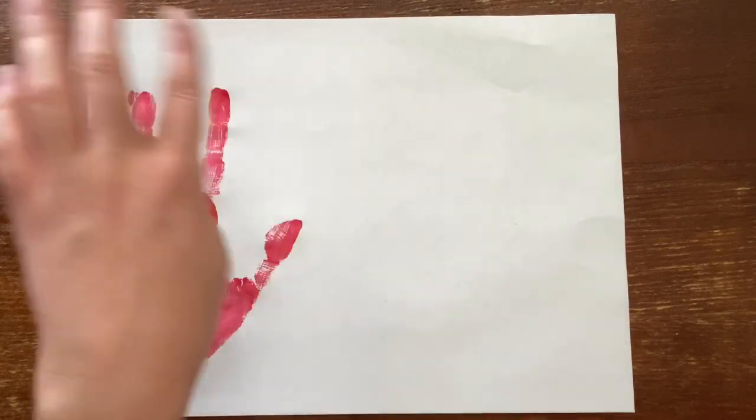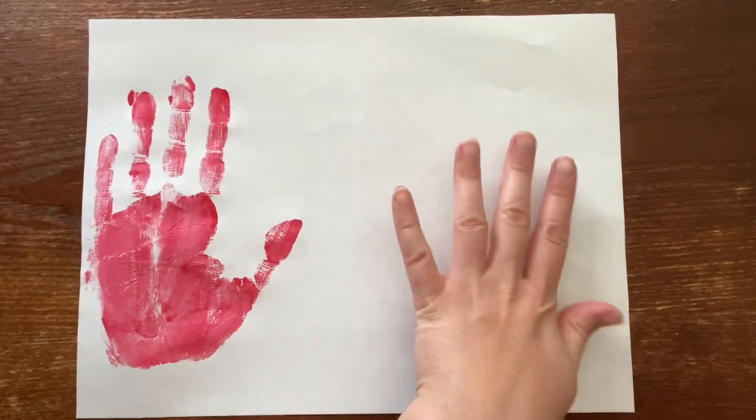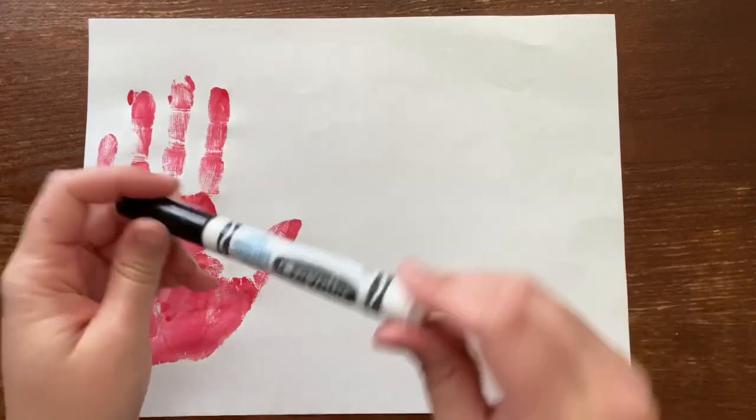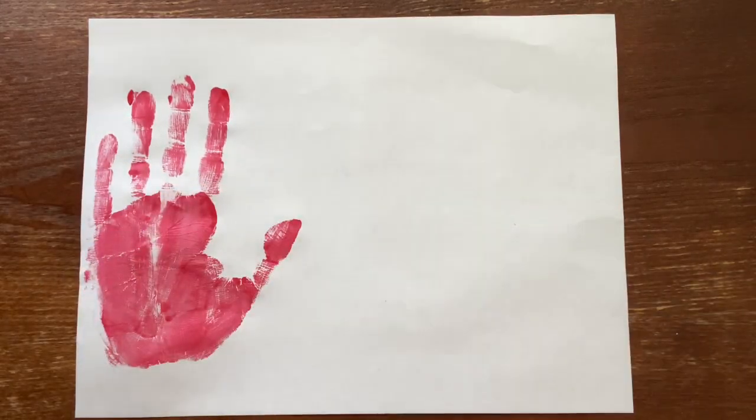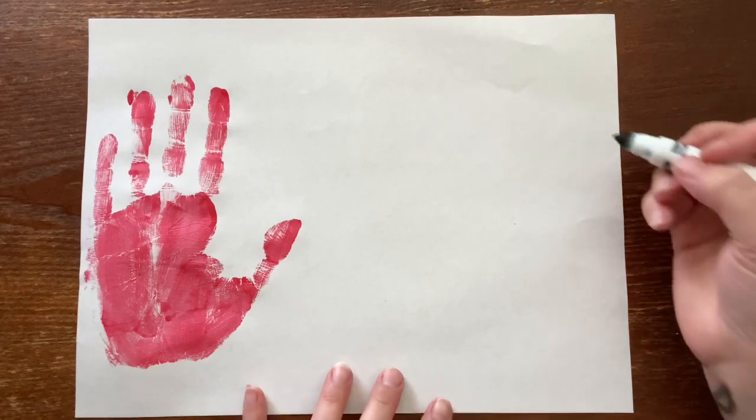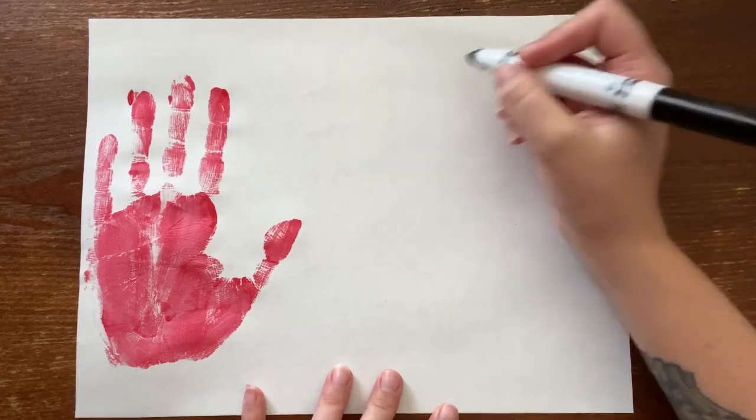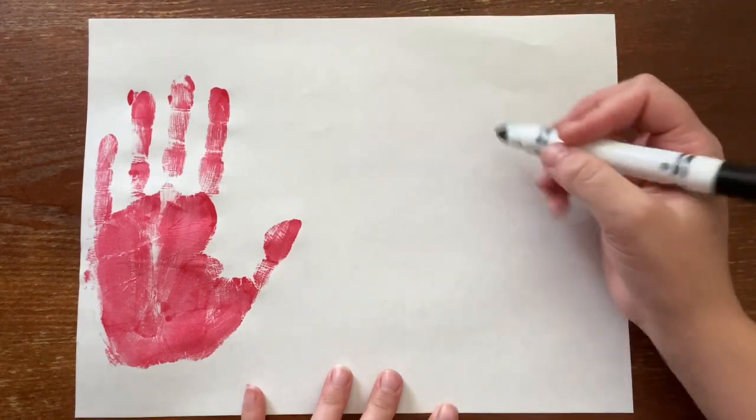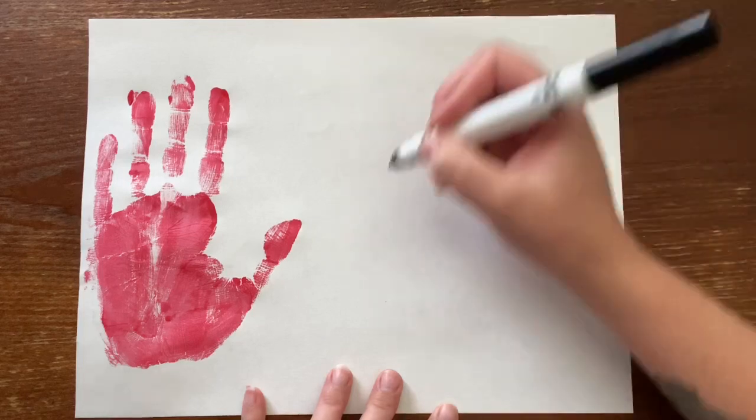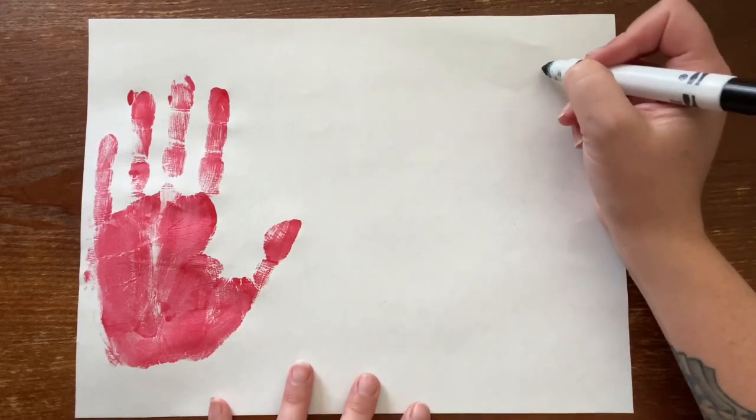Alright, so now while my handprint is drying, I'm going to come on over here and we're going to go ahead and start drawing his shell. So you're going to need a black marker, a pencil, or any kind of dark crayon will work as well. And we're going to start drawing his shell. So a shell is almost like doing a six in a way. You're just going to keep going like this. So I'm going to start up here.